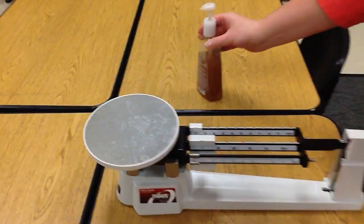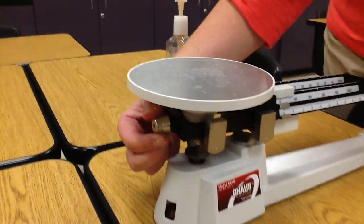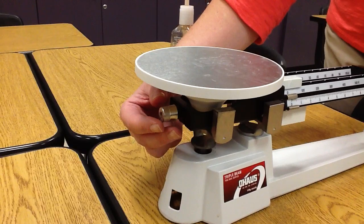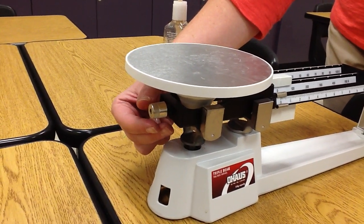We then have the thumb screw right here. And what this is, it helps to balance out the triple beam balance because that's the first thing you're going to want to do before you measure.